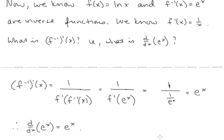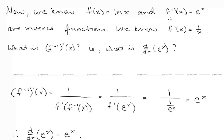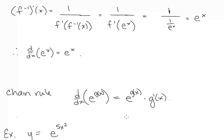Now let's talk about the derivative of e to the x. We know f of x equals ln x and f inverse of x equals e to the x are inverse functions, and f prime of x equals 1 over x. Using the relationship between derivatives of inverse functions from lesson 1: f inverse prime of x equals 1 over f prime of f inverse of x, which is 1 over f prime of e to the x. Since f prime of x is 1 over x, the denominator becomes 1 over e to the x, and this simplifies to e to the x. So the derivative of e to the x is e to the x. For a composition e to the g of x, the chain rule gives us e to the g of x times g prime of x.